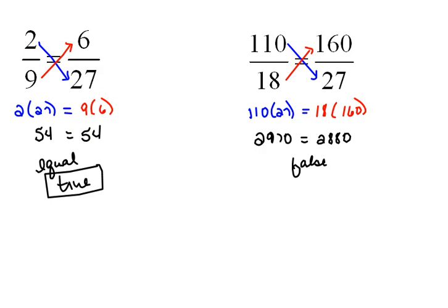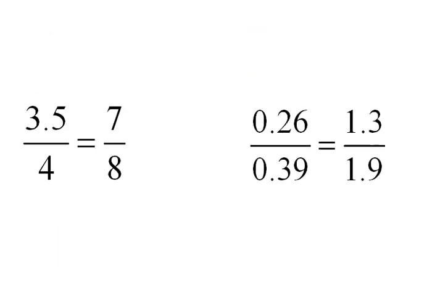As we saw in these last two examples, we can use this cross-product method to determine whether the proportions are true or not. Now with these, we could have simply reduced the fractions fully and then seen whether they were the same or not. It won't always be that way. Here's where the cross-product method really will help us out.